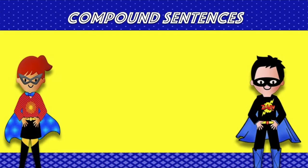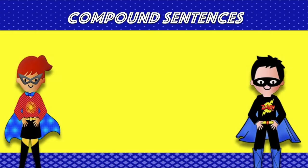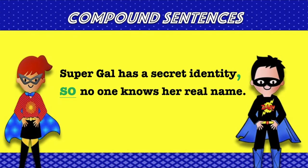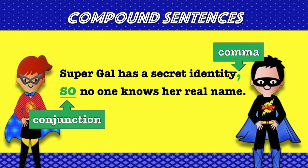Let's try one more example together. Supergal has a secret identity. No one knows her real name. We can rewrite this as: Supergal has a secret identity, so no one knows her real name. We have the comma separating the two clauses and the conjunction that makes this a compound sentence.